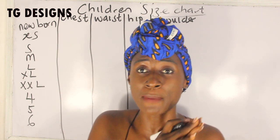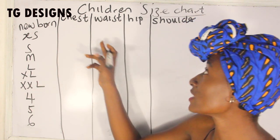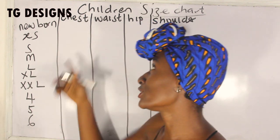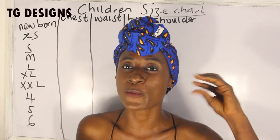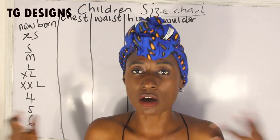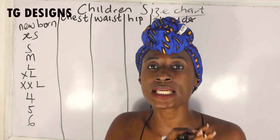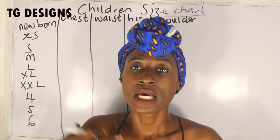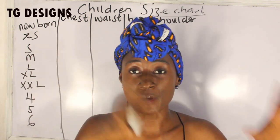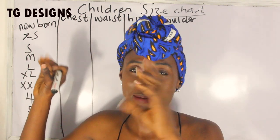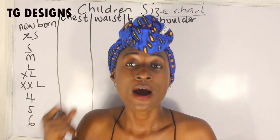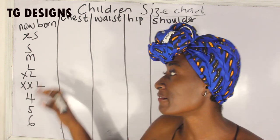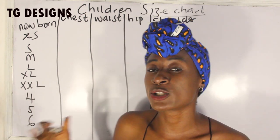You'll also notice that for children I say chest measurements, not breasts or bust like in women's size charts, because children don't have busts yet. One thing about children's size charts is that the measurements also apply to males, because the same size of a female baby is the same size of a male baby. And having different sizes here is what's going to help you know exactly what to get.